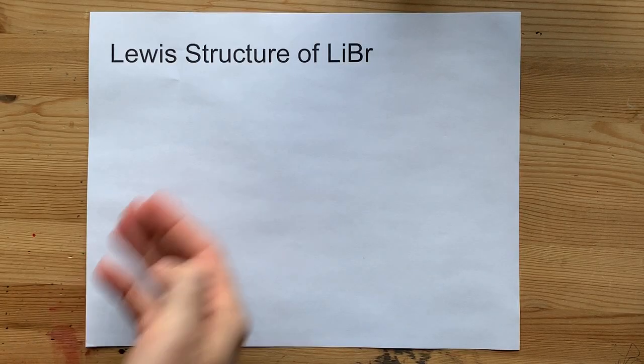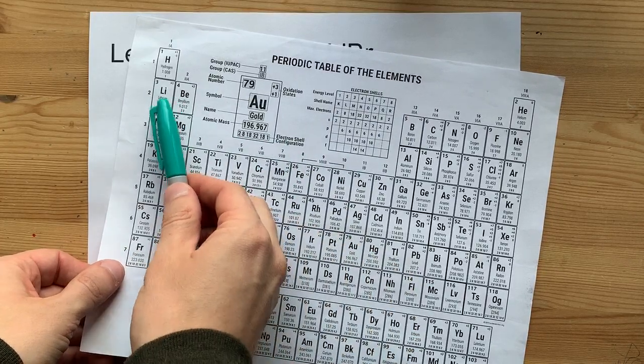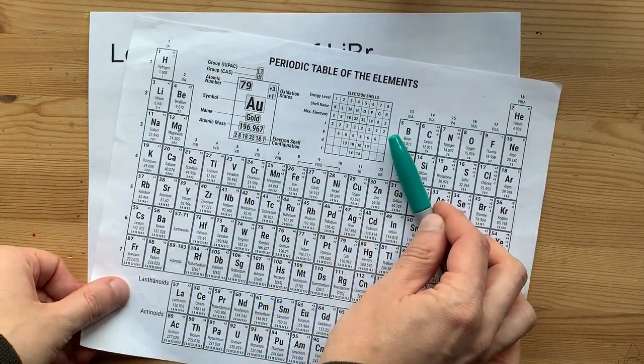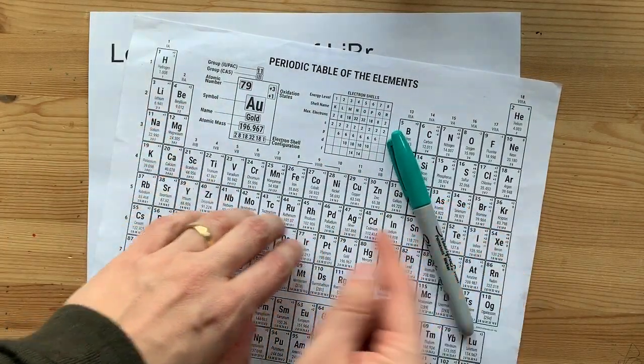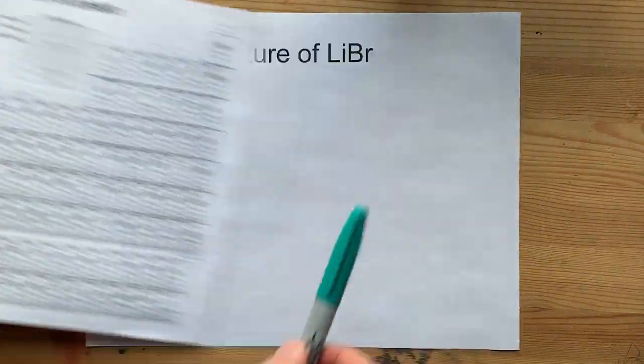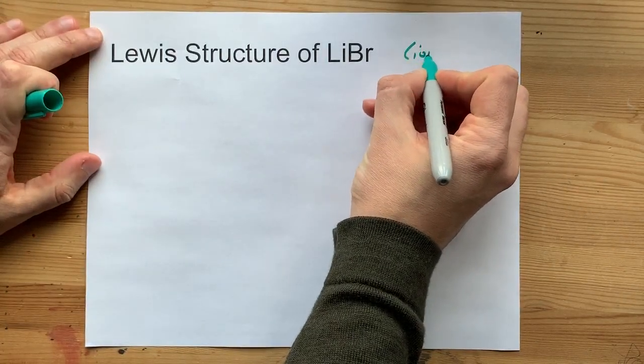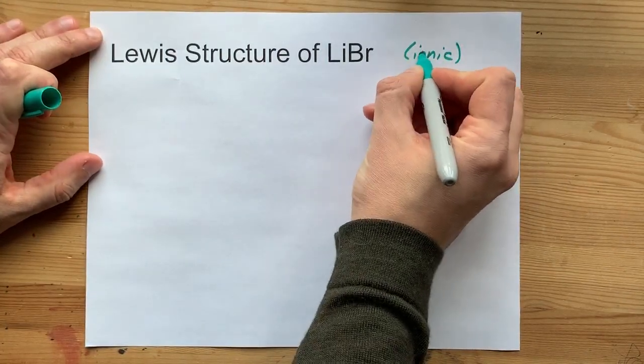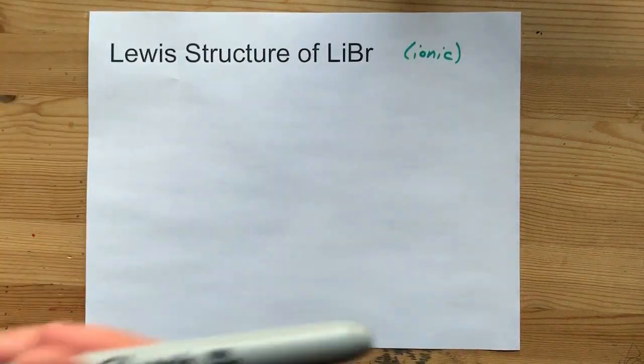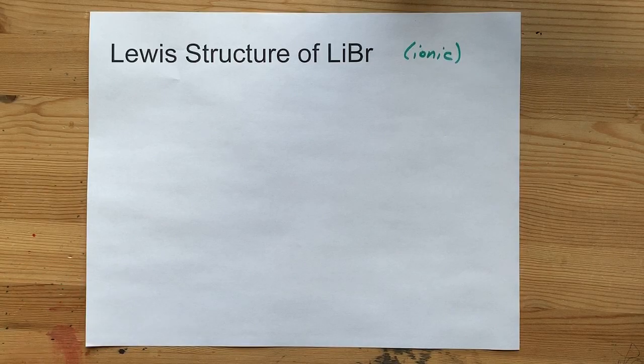Let's draw the Lewis structure for lithium bromide. Lithium is on the left-hand side of the staircase, it's a metal, and bromine is on the right-hand side of the staircase, it's a non-metal. When a metal and non-metal combine, you get an ionic compound, which means they are not sharing electrons. There's going to be a transfer of electrons from one to the other. Let's start with lithium.